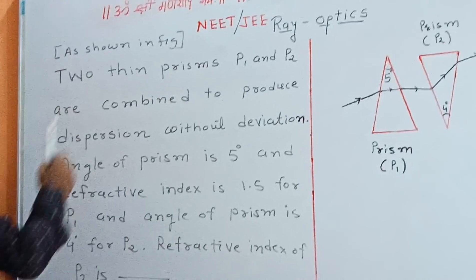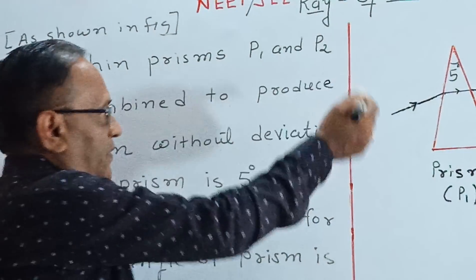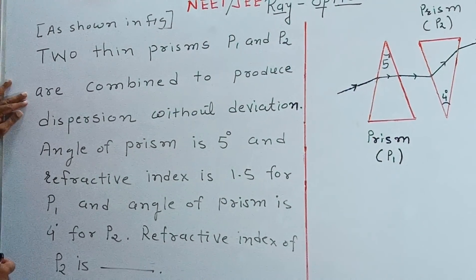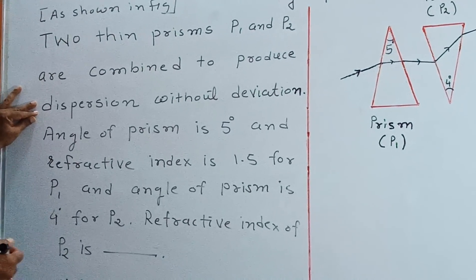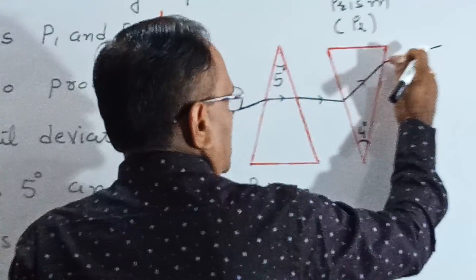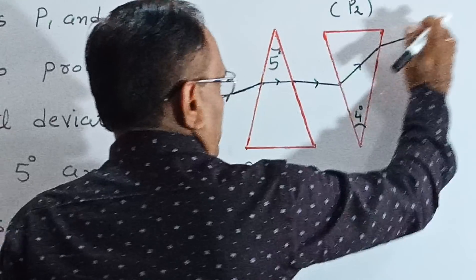As shown in figure, two thin prisms P1 and P2 are combined to produce dispersion without deviation. This is the incident ray, and this is the emergent ray, so this is without deviation.